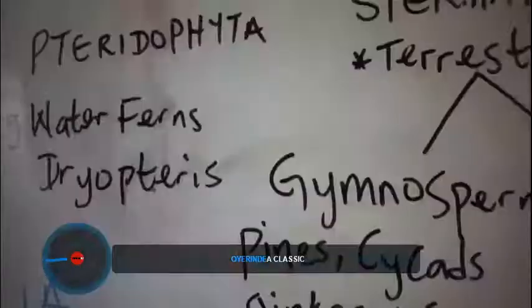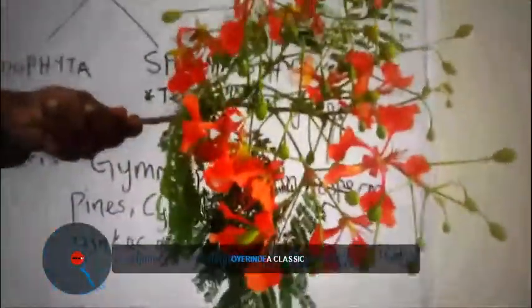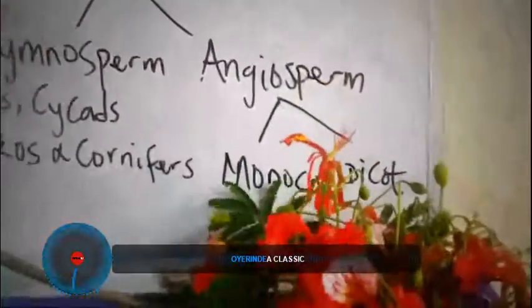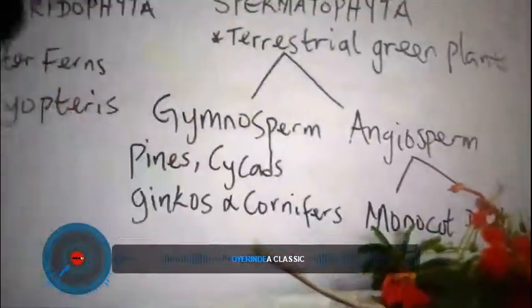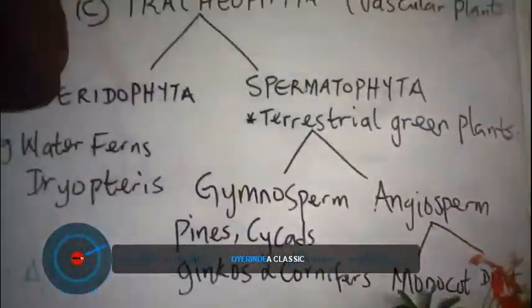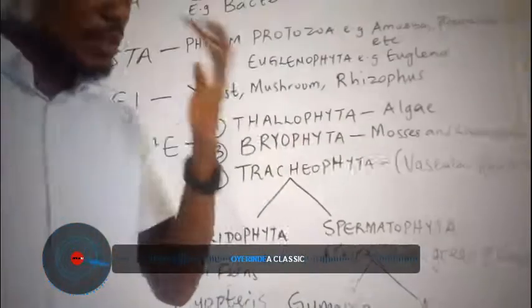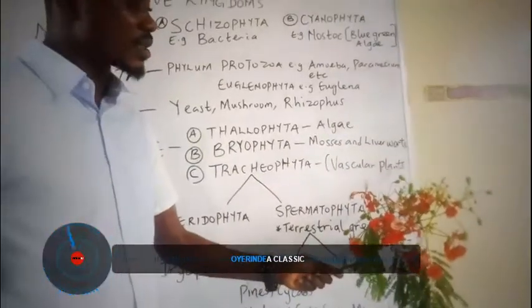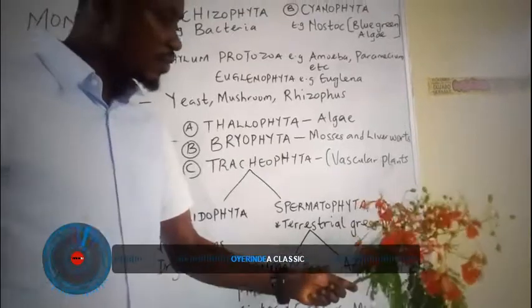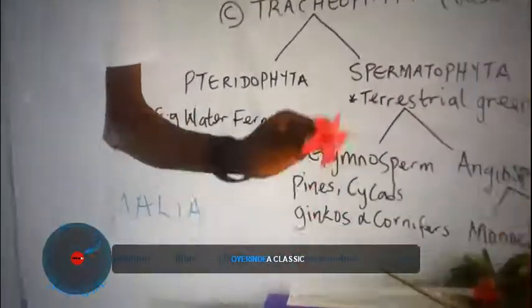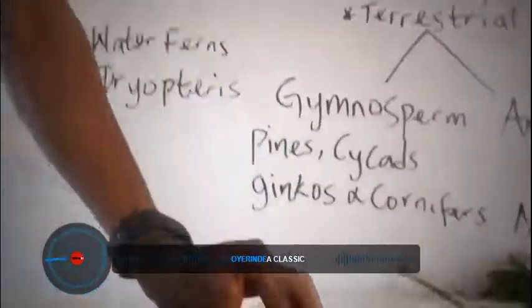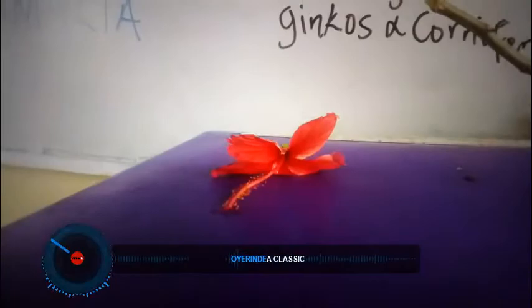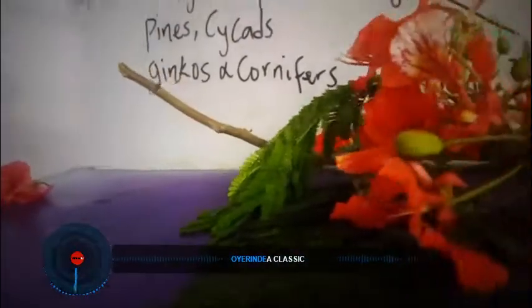You may be given Flame of the Forest, you may be given Pride of Barbados, you may be given Cotylaria. This Flame of the Forest — that is Delonix regia — it will be given, as well as Hibiscus. So these are some of the specimens that should be given.